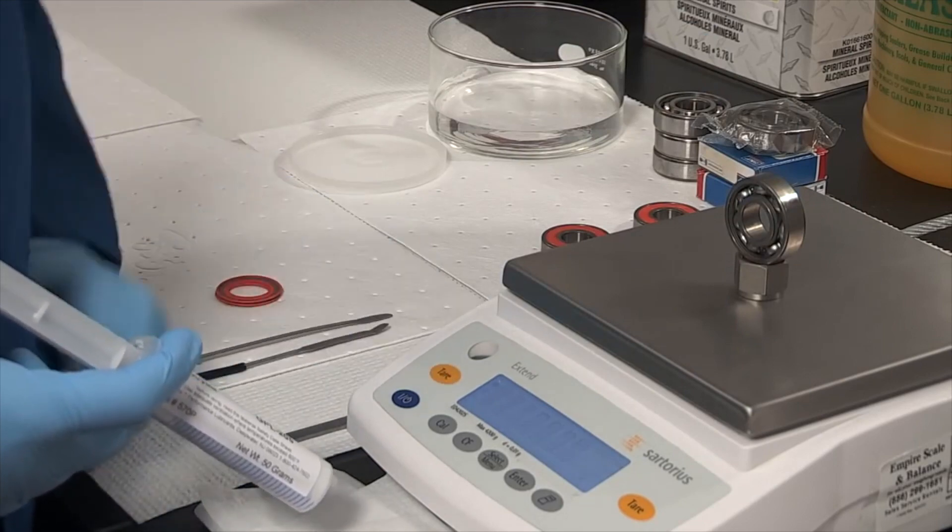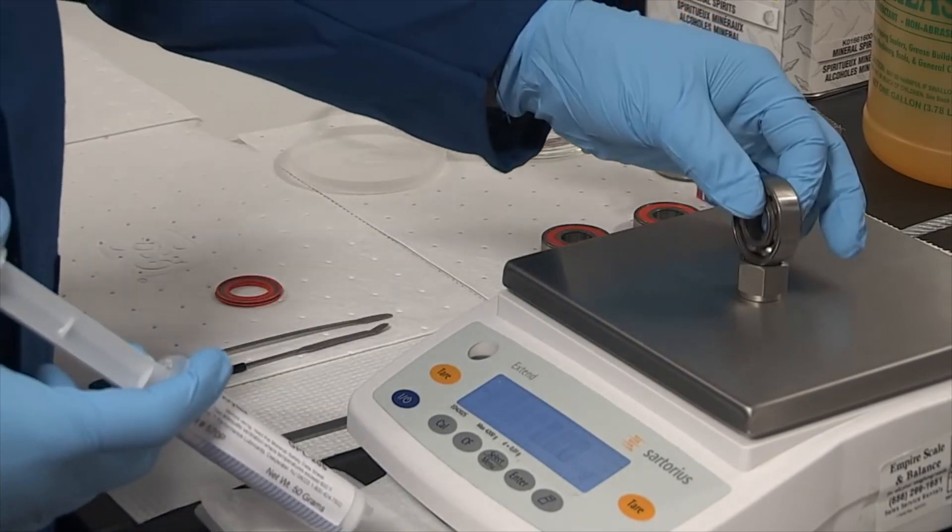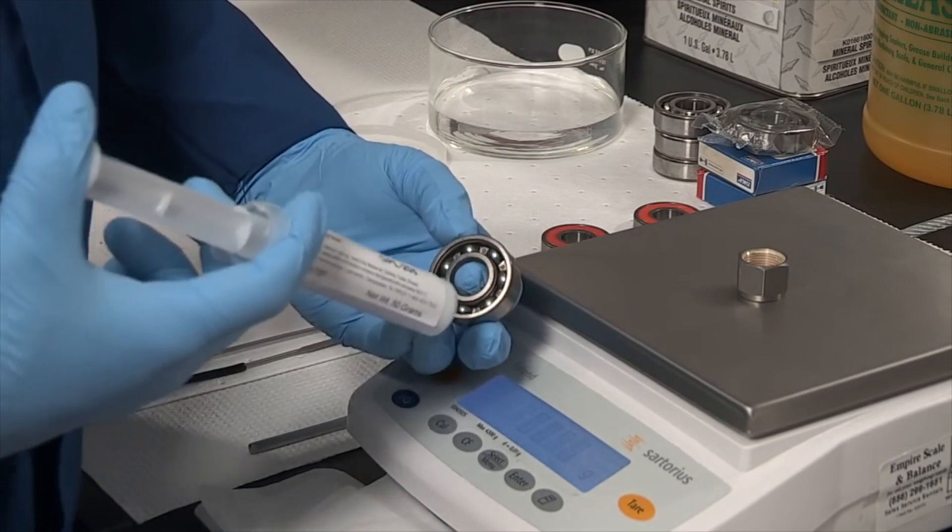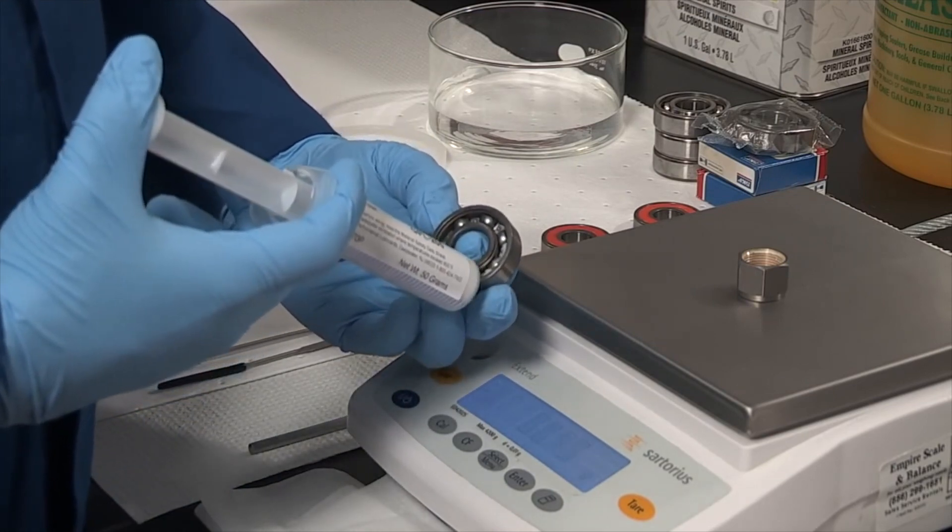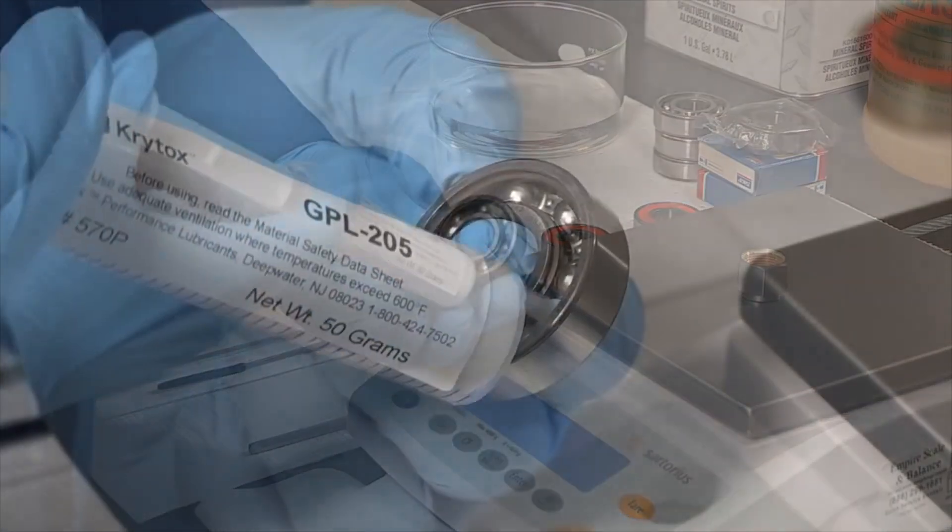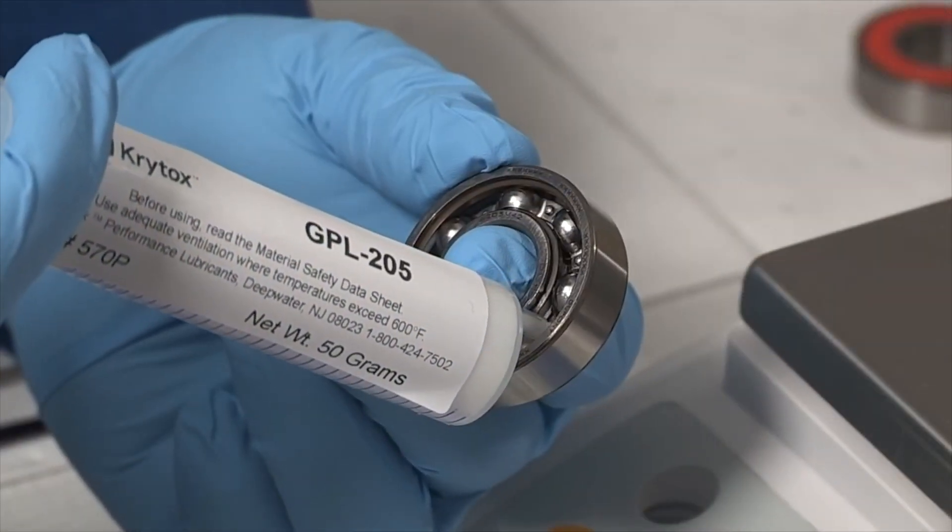Next, weigh the bearing and use a clean syringe of Krytox lubricant. If filling by volume, remember that the density of Krytox grease is about 2 grams per mil, or about twice the density of common hydrocarbon-based greases.